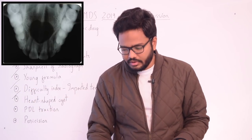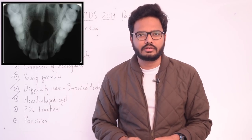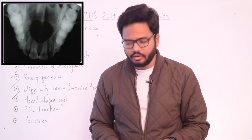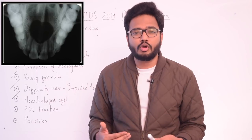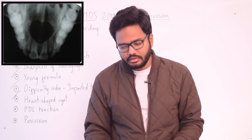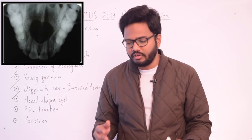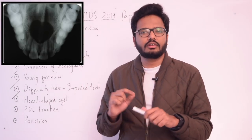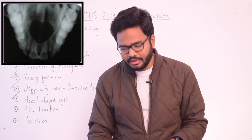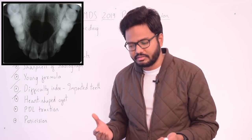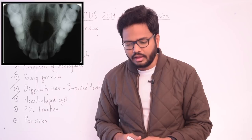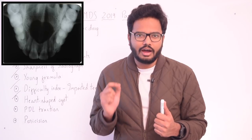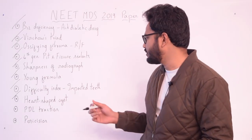Moving on to the heart-shaped cyst — nasopalatine duct cyst, also known as incisive canal cyst. It is the most common non-odontogenic cyst of gnathic bones, affecting approximately one out of every 100 persons. Radiographically, nasopalatine duct cysts are usually well-circumscribed radiolucencies of the anterior maxilla, apical to the roots of maxillary incisors, and rarely cause root resorption. They are round, ovoid, or heart-shaped due to superimposition of the nasal spine.